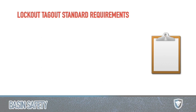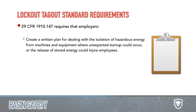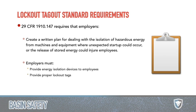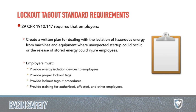The lockout tagout standard requirements are pretty straightforward. OSHA 1910.147 says each company needs to have a plan with specific equipment identified — it can't just be a generic write-up that applies to everything; it needs to be specific to the equipment you own. Employers must also give locks and tags to employees, provide step-by-step procedures, and provide training for authorized, affected, or other employees.